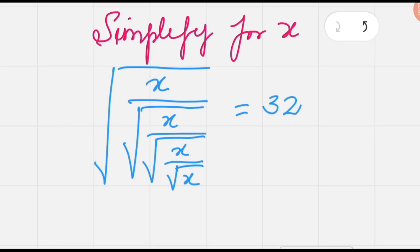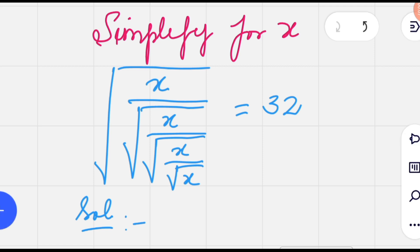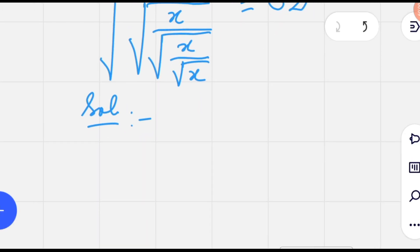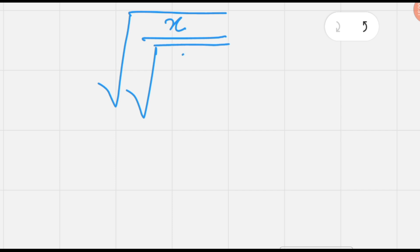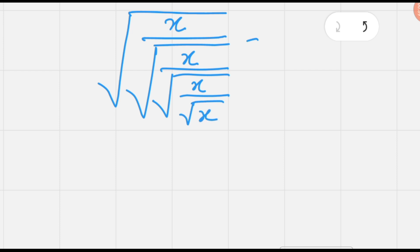Hi everyone. In this video we are going to solve a radical equation involving x — specifically an equation involving four radicals, such that the radical of x is divided by radical x, again divided by radical x, and divided by another radical x, and this equals 32.